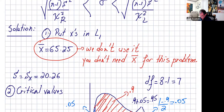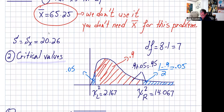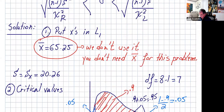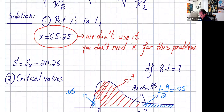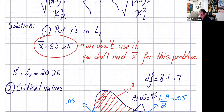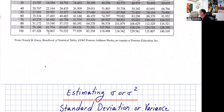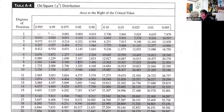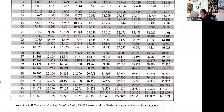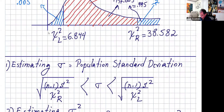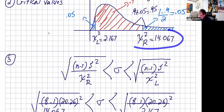So Sx is 20.26. For the critical values, it's exactly the same way we just did: 90% confidence level, so the area in the tail is one minus 0.9 divided by two, which is 0.05. So 0.05 and degrees of freedom — we have eight numbers, n is eight, so n minus one is seven. Seven and 0.05, let's see what we get from the table. Seven is right here, 0.05 is right here — so 14.067.